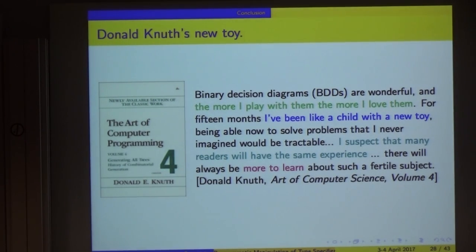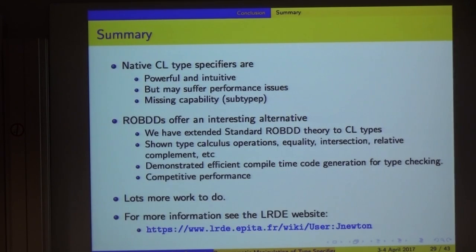There is a quote by Donald Knuth after he discovered these binary decision diagrams apparently late in life. He said: 'Binary decision diagrams are wonderful. The more I play with them, the more I love them. For 15 months, I've been like a child with a new toy, being able to solve problems that I never imagined would be practical. I suspect many readers will have the same experience, and there will always be more to learn in this fertile subject.' I would like to echo that sentiment - it's really an interesting area, there's a lot of things that you can do. It doesn't solve every problem. I'm not suggesting to you that you throw away all the code that you have with type specifiers and use this. There's lots of more research to be done. Hopefully a lot of fun research to be done. But it's an interesting alternative because it gives some capabilities that the native approach, as mentioned in the specification, doesn't really allow.